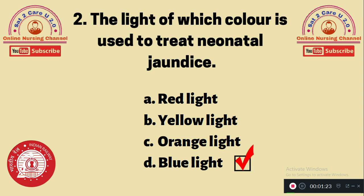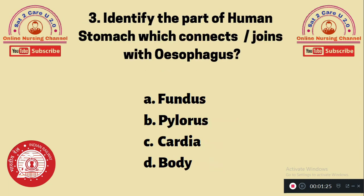Question 3: Identify the part of the human stomach which connects and joints with the esophagus. A. Fundus, B. Pylorus, C. Cardia, D. Body. The upper part of the stomach which connects to the esophagus is option C — Cardia.